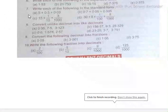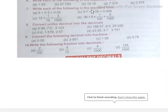Next is question number 7: write each of the following in the extended form. So first, question a: 5 plus 0.3 plus 0.03 - this is standard form.